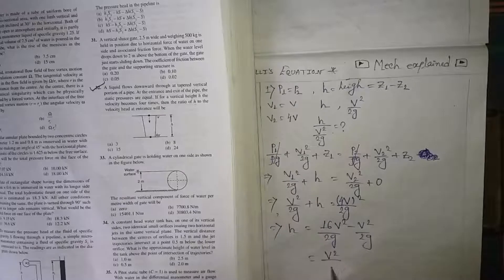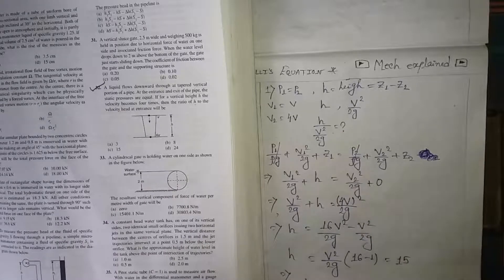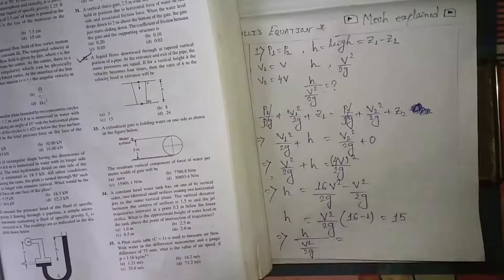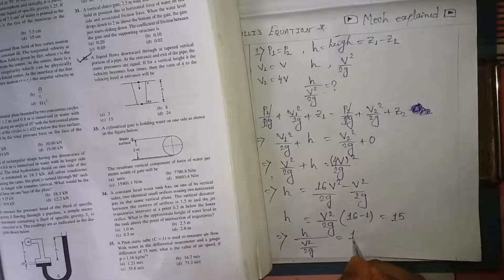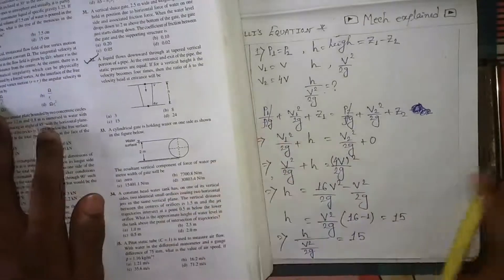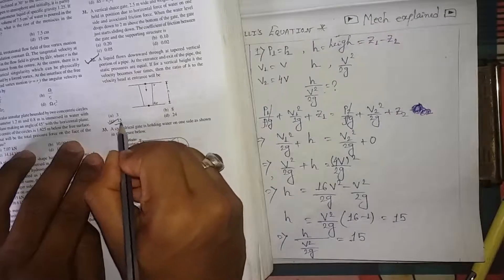Taking common factor v²/2g: h = (16 - 1) × v²/2g = 15 × v²/2g. Therefore h divided by (v²/2g) equals 15. This is the correct answer — the ratio is 15.